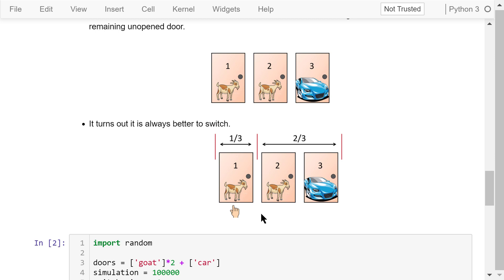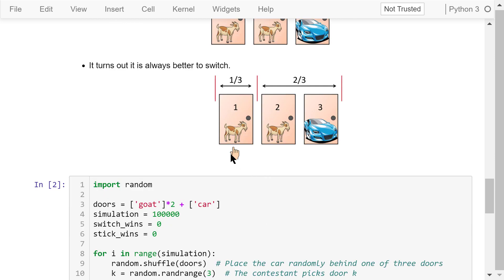Let me explain why. The first time the contestant picks a door, the chance of winning is one-third. That means there is a two-thirds chance that the car is somewhere else, that is behind one of the other two doors.